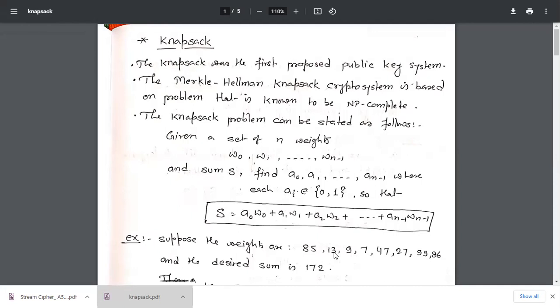Here w0 is 85, w1 is 13, w2 is 9, w3 is 7. Here the elements are 1, 2, 3, 4, 5, 6, 7, 8. So w7 is 86.